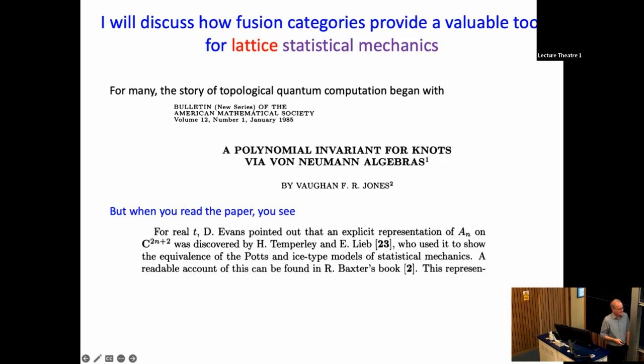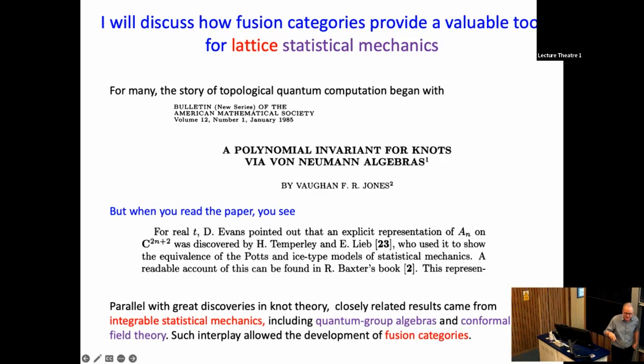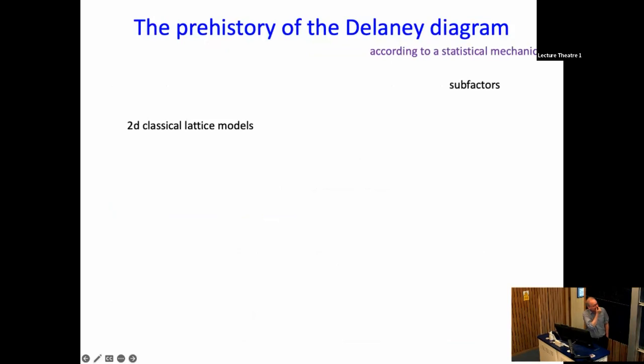At the same time Vaughan did his work in the mid to late 80s—actually starting in the early 80s—there's all this spectacular work that came out of the stat-mec community, among these things: quantum group algebras and conformal field theory. All these things allowed the development of fusion categories and very much fed in—not just Vaughan, but all this other stuff. So I decided to make a slide, and here's my version of what led up to that and some of the things I'll talk about today.